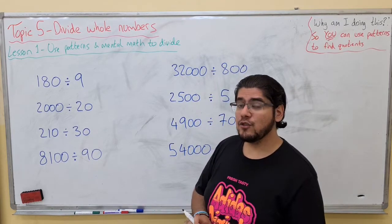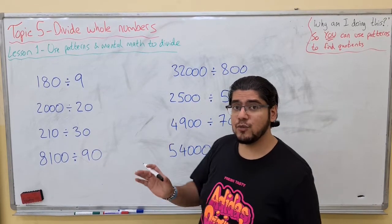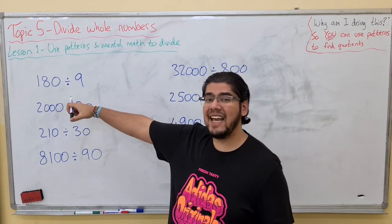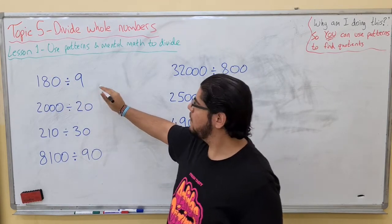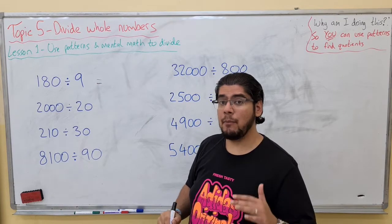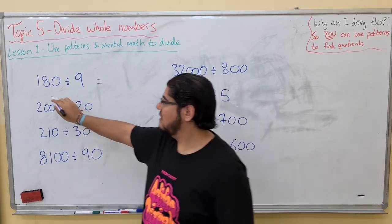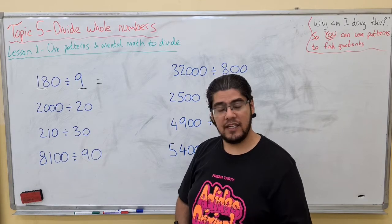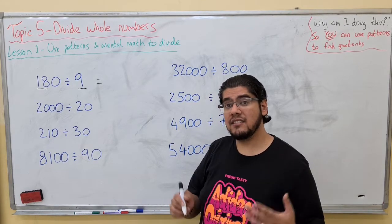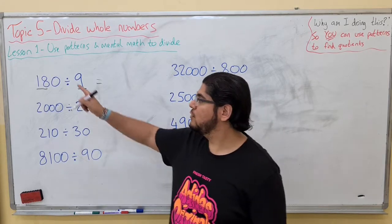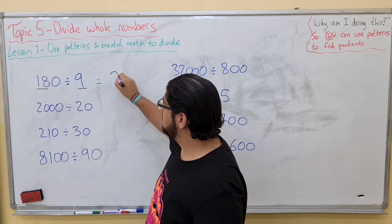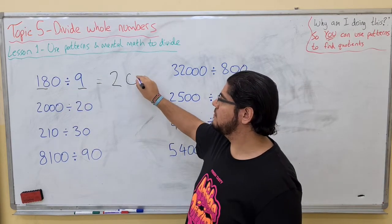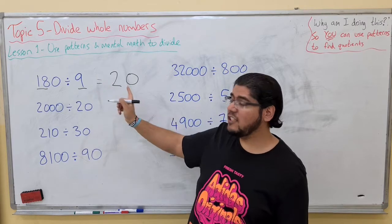Let's take our first question for example. For all of these questions we are going to use mental math and patterns to find the answer. 180 divided by 9. Break it down step by step — just look at the 18 and the 9. Can we do 18 divided by 9? Yes we can. Our multiplication facts tell us that 9 times 2 is 18, so 18 divided by 9 must be 2. Now we have a zero left over — just add it onto the answer. So 180 divided by 9 equals 20.